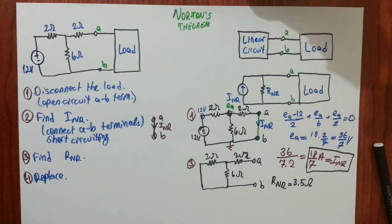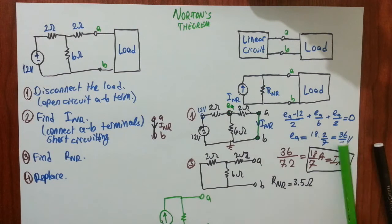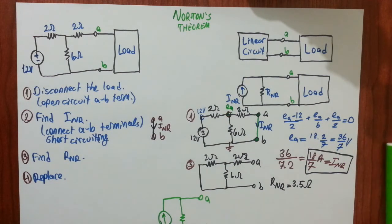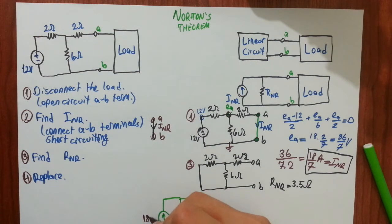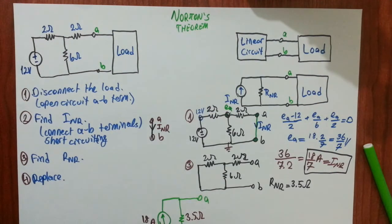Fourth step is very easy now. We will replace everything with Norton equivalent. And that's just putting values into their places. What we found INR is 18 over 7 amps. And RNR is 3.5 ohms. And that's how you find Norton equivalent of a circuit.